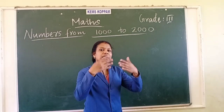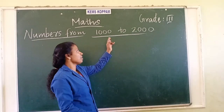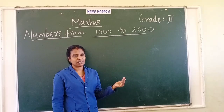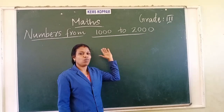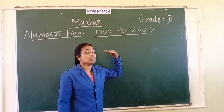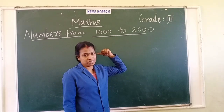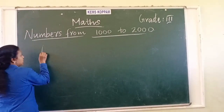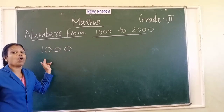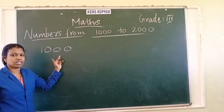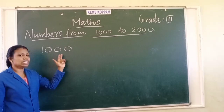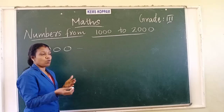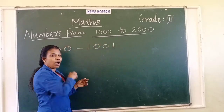When we add 1, we will get the next number. So let's start from 1,000. What is the next number after 1,000? 1,000 and 1 comes, isn't it? Let's write 1,000. The first 4-digit number is 1,000. The next number is 1,001.